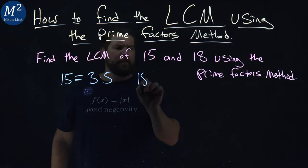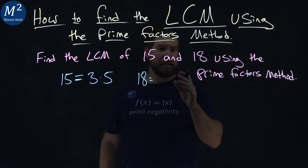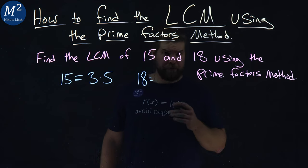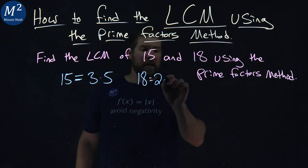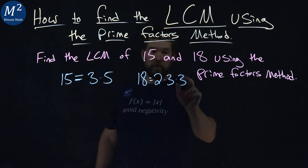What about 18? 18 is a little more difficult. 18 is 6 times 3, and 6 is 2 times 3. So 18 is 2 times 3 times 3. 2 times 3 is 6, times 3 is 18.